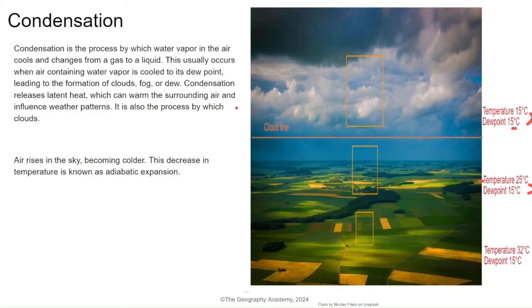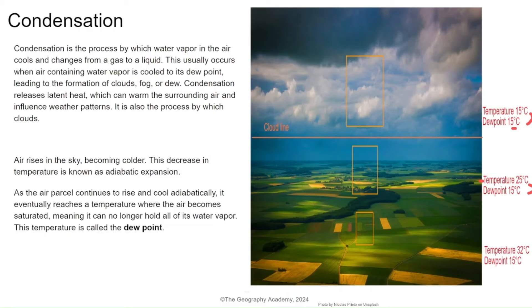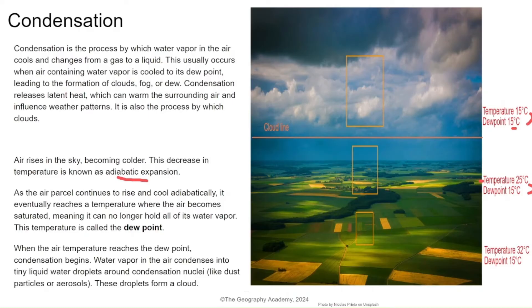Condensation releases latent heat, and as that happens, clouds start to form. The expansion of air as it cools and reaches the dew point is known as adiabatic expansion. This adiabatic cooling continues until the air reaches its dew point and condenses. At that point, the air contains both water vapor and liquid water, and those liquid droplets can group together around condensation nuclei — something that multiple drops coalesce around — forming larger droplets that can potentially fall as precipitation.